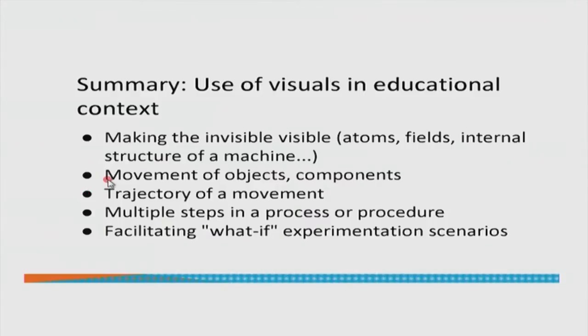The third big category, related to the second, is the trajectory of movement — when you want to plot the trajectory of movement or make it explicit how the movement happens. If we go back to the DNA visualization, it falls in the category of making the invisible visible. The robotics visualization comes in the category of movement of objects and trajectory of movement. While the ensemble visualization comes in the category of making multiple steps in a process or procedure explicit, because it had multiple steps showing how the average was calculated.